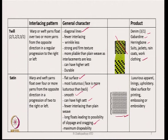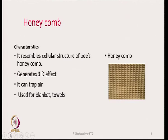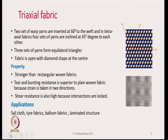Satin fabric gives a luxurious appeal and is generally used for making upholstery. The honeycomb weave resembles the cellular structure of a bee's honeycomb, has a slight 3-dimensional effect, can trap air, and is generally used for making blankets or towels.